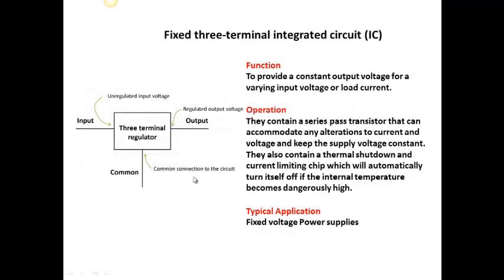This is the three terminal regulator that we saw in video one. Inside it has a series pass transistor, and also thermal shutdown and current limiting capabilities — if too much current flows it will shut down, and if it gets too hot it will shut down. Basically, it will take a voltage in and keep the output voltage constant, as long as we feed it three or four volts more than the output. So if we want five volts out, feeding it eight, nine, or ten volts will keep that constant. It's used for fixed voltage power supplies.